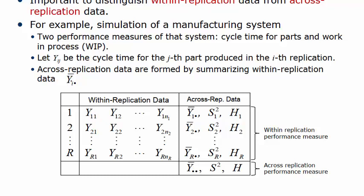The across-replication data are formed by summarizing within-replication data. That is, y_i-bar is the sample mean of the nth cycle time from the ith replication, whereas s_i² is the sample variance of the same data. The confidence interval half width based on the dataset can be computed as h_i. We have a set of formulas to compute y_i-bar, s_i, and h_i.